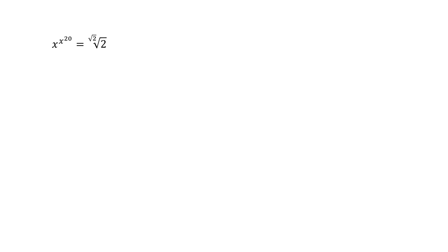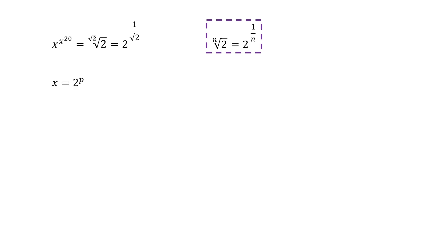Here is the problem. First, let's rewrite the right hand side. Because we have this notation for the power index, we can let n equal to square root 2, and then the right hand side can be written in this way. Because the base for the right hand side is 2, we let x equal to 2 to the power p, where p is a real number. So instead of solving for x, we solve for p. And then we need to deal with the left hand side.